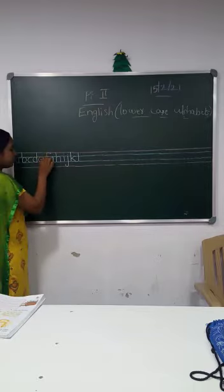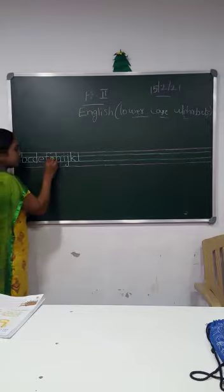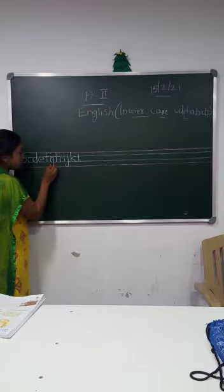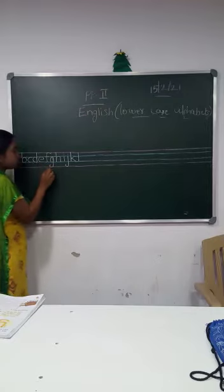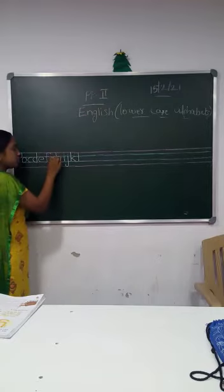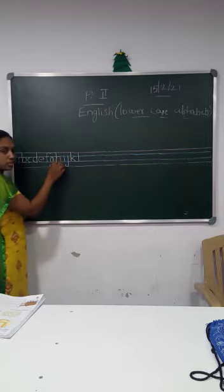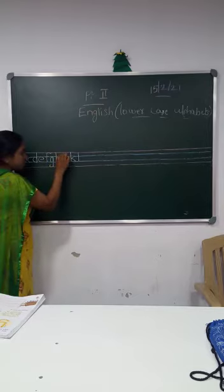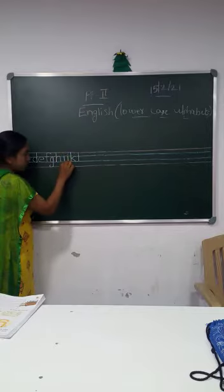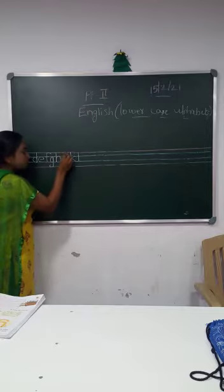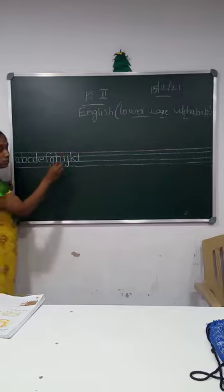Letter F: up curve, standing line, sleeping line. Letter G: left curve, go up, come down, touch the red line and give a curve. Letter H: standing line, up curve. Letter I: standing line, a dot. Letter J: standing line, come down, touch the red line and give a curve, and keep a dot.